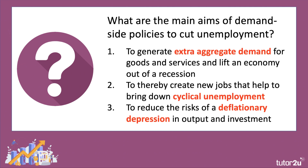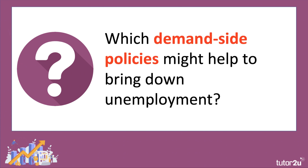The key aim of demand-side policies is to generate enough new aggregate demand for goods and services to help lift an economy out of a deep recession. If there's enough new demand for output, that should in turn create new jobs, helping to bring down cyclical unemployment, and can also help to lower the risk of a price deflationary depression, where prices, output, investment, and jobs are all falling.